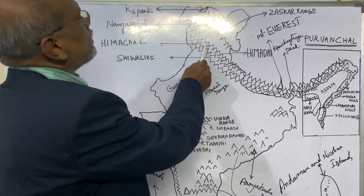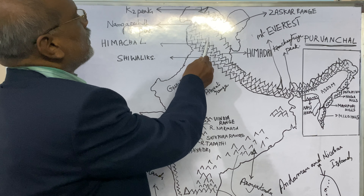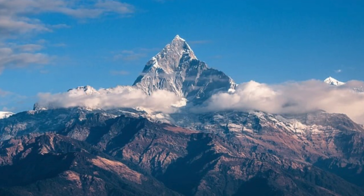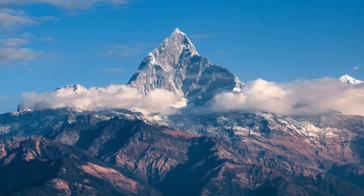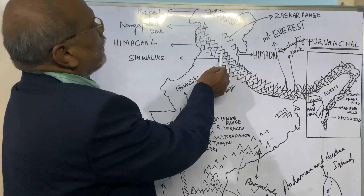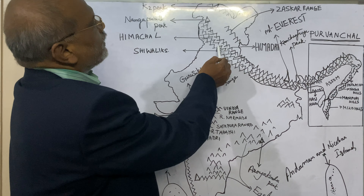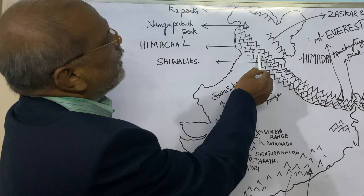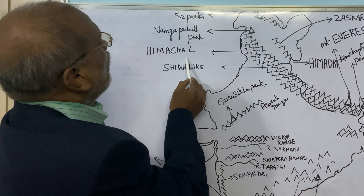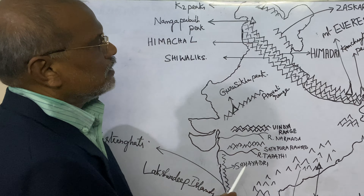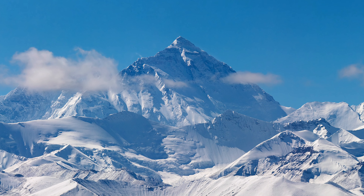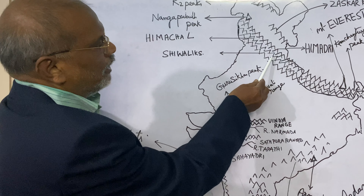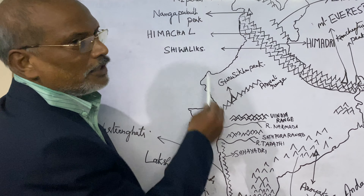The northernmost Himalayan range is Himadri, or Greater Himalayas. The middle range is called Himachal, or Lesser Himalayas. The southernmost Himalayan range is called Shivalik.